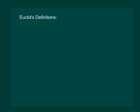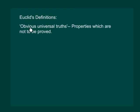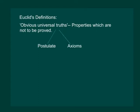Euclid assumed certain properties which were not to be proved. These assumptions are actually obvious universal truths. He divided them into two types: Postulates and Axioms.